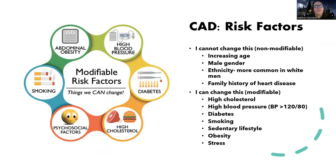Things that we cannot change - non-modifiable risk factors - are going to be things like age. I can make myself look younger, but my age is my age. Certain genders are more at risk; when you think CAD, it's usually going to be middle-aged white males. Then also having a family history. Those are all things I can't change - it's in my genetics.